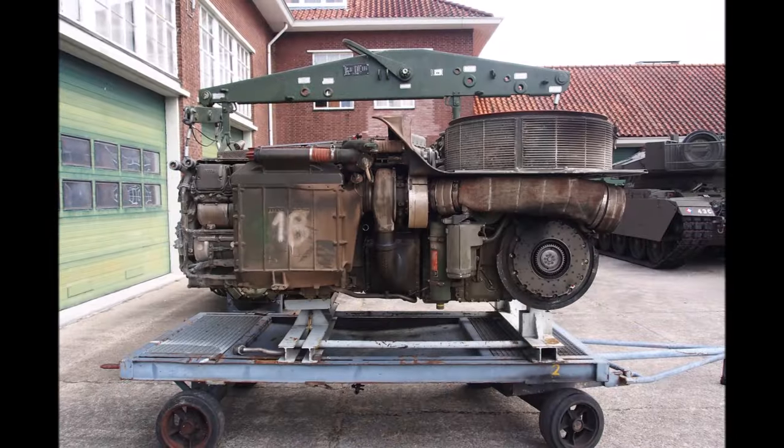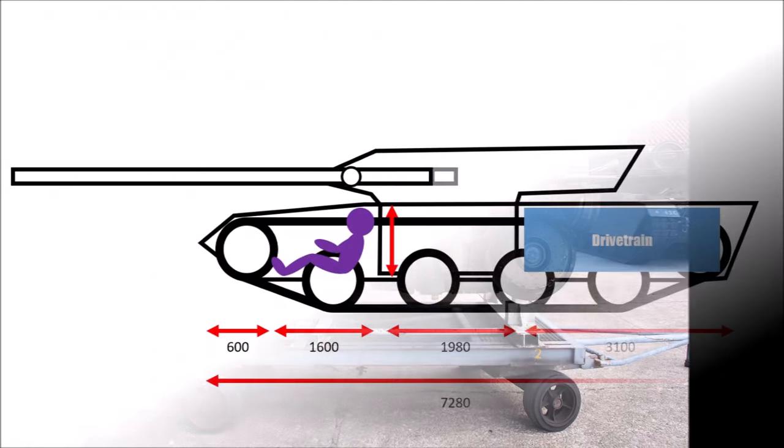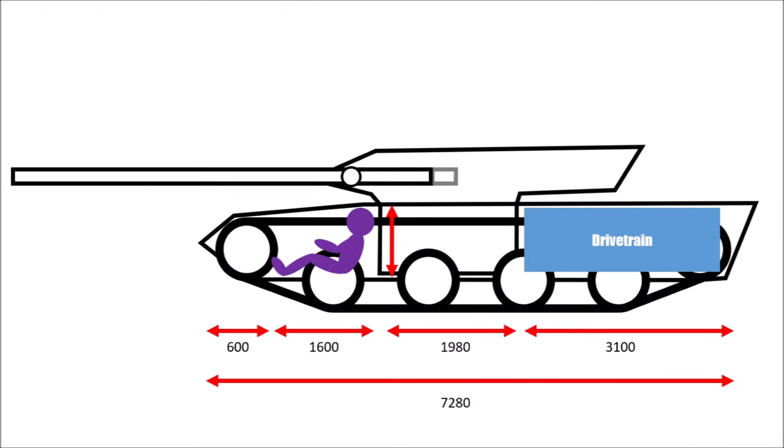Such a drivetrain is around 3m long, including gearbox, and has a weight of 6 tons. So if we look at all of these components together, we can work out the overall length of the hull.